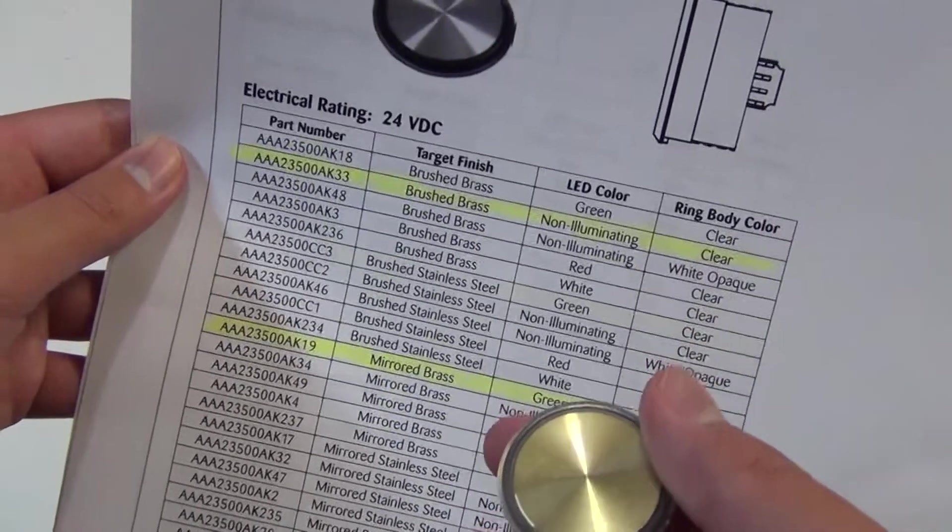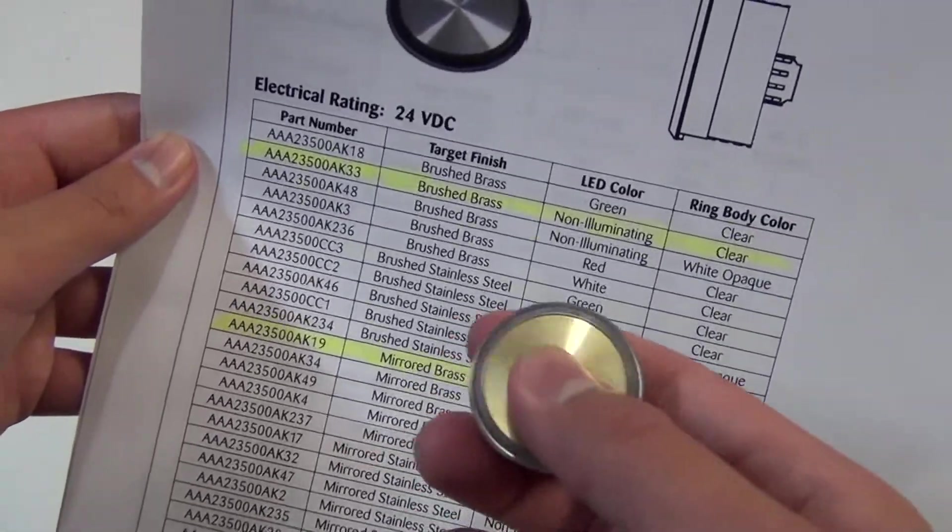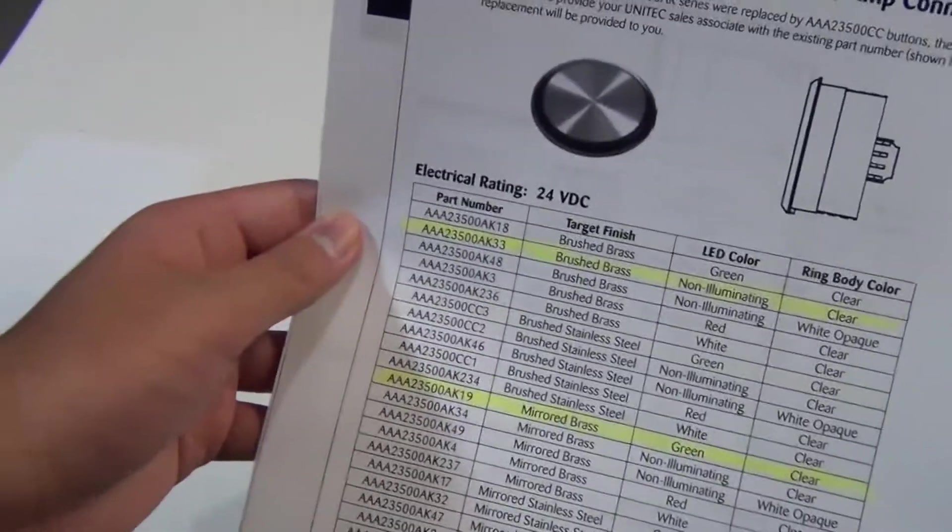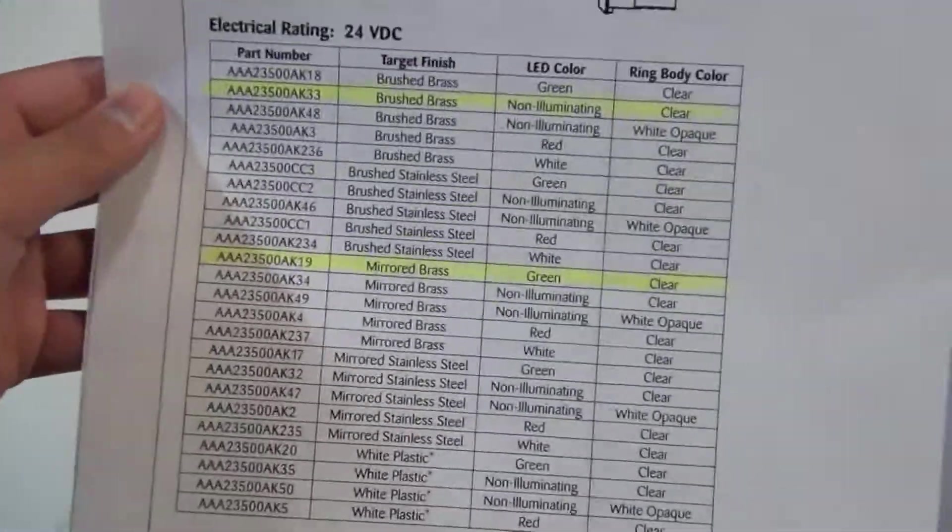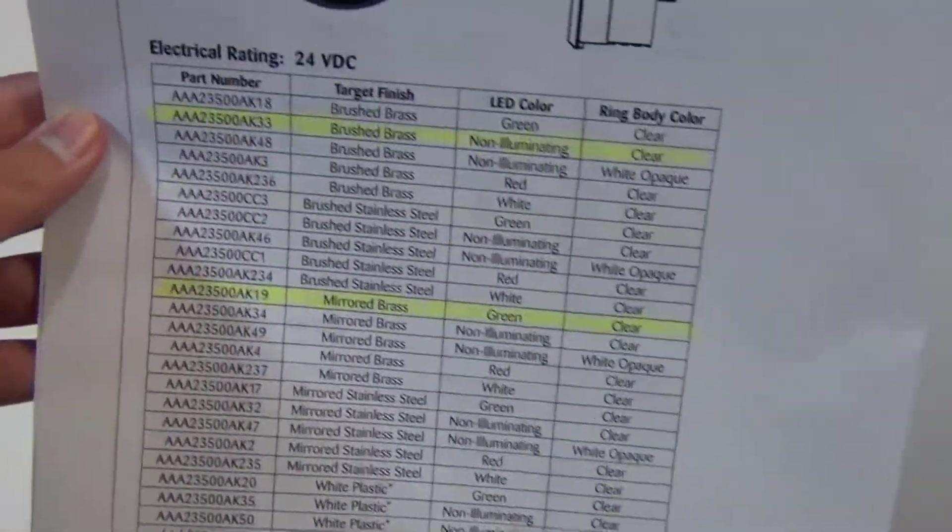AAA23500AK33 non-illuminating brushed brass button, so I'll be selling that button if you want it. Just go check the link in the description below.